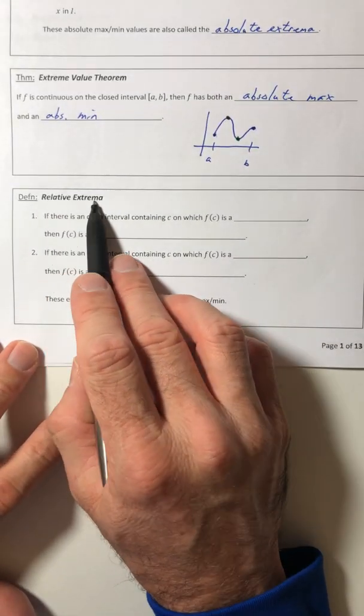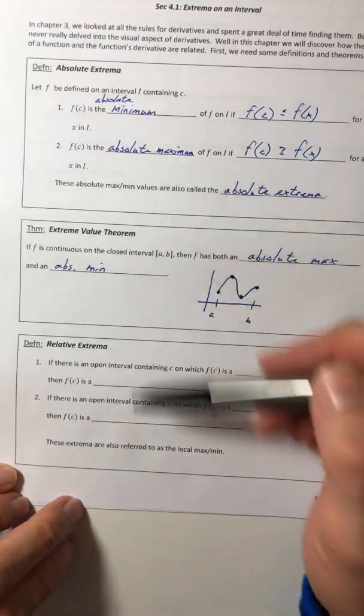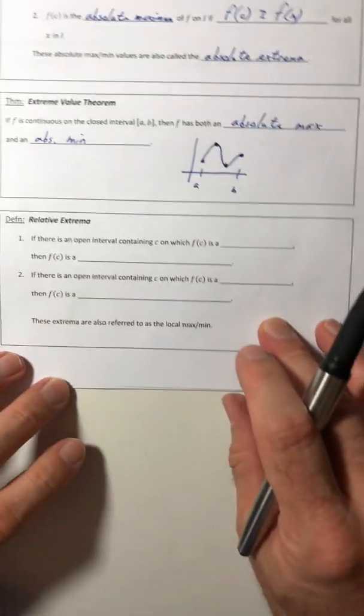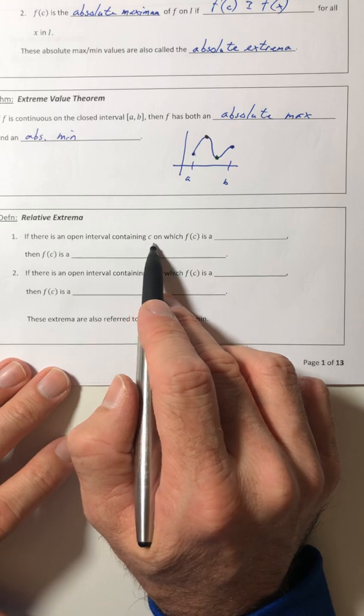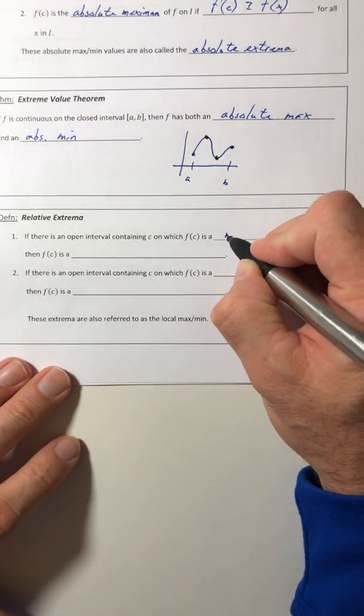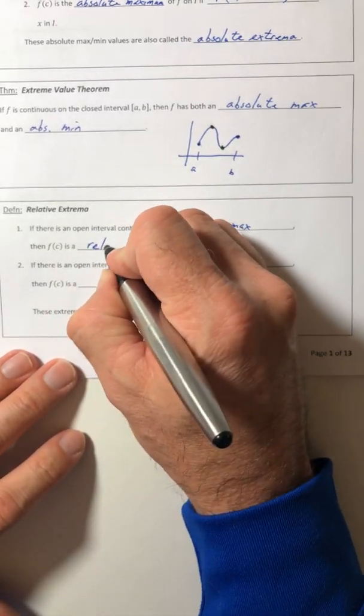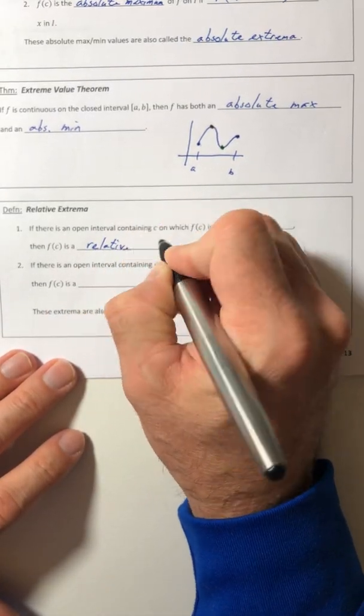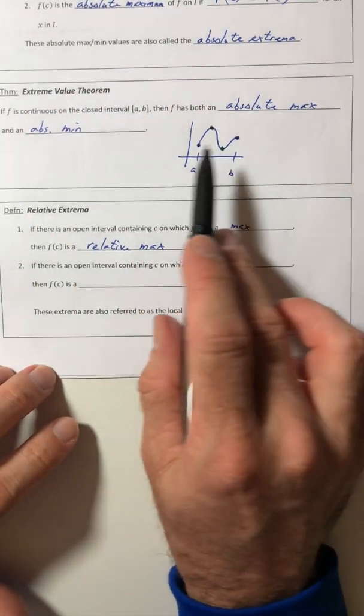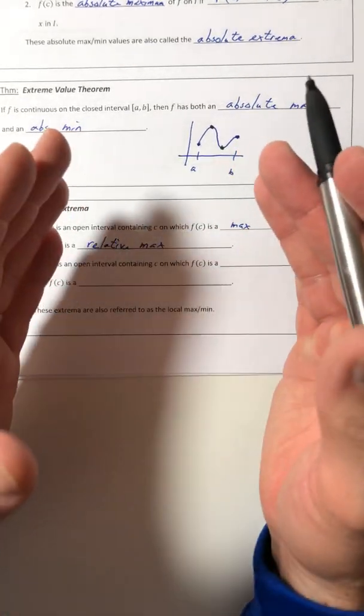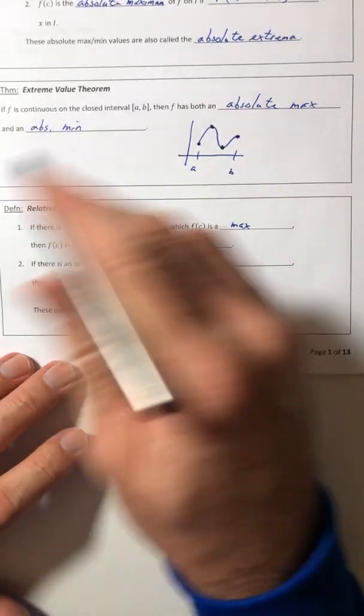Let's look at relative extrema. So it's a little different than absolute. Otherwise they wouldn't have the two categories. So for relative extrema, if there is an open interval containing C on which F of C is a max, then F of C is a relative max. So instead of looking at the entire interval, it might only look at a certain section. So in that little section, it's a relative max. It's relative to its position versus other places.